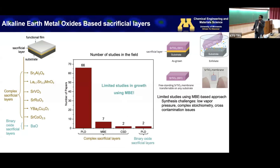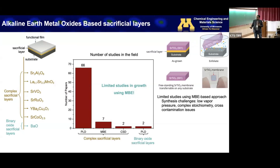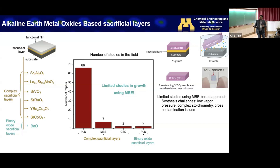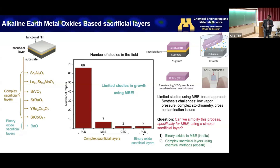If you look at the sacrificial layer literature, you find something surprising — most of the work done using these sacrificial layers has used pulsed laser deposition. Less than 10% of the work has been done by MBE. The reason is obvious: MBE requires individual elements to be supplied with carefully controlled fluxes to make complex stoichiometry. You don't want to create all this complex stoichiometric material with a lot of pain just to sacrifice it. So can we simplify this process for MBE using a simpler sacrificial layer?